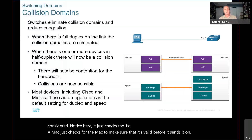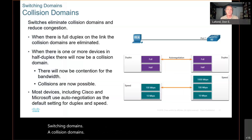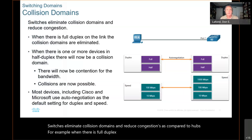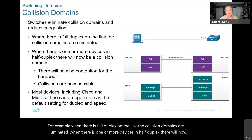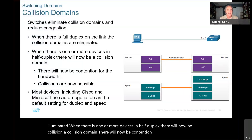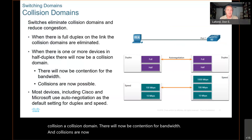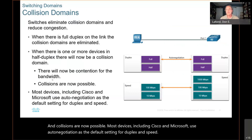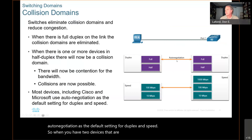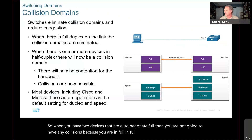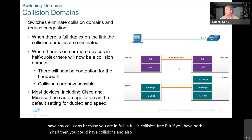Switching domains — collision domains. Switches eliminate collision domains and reduce congestion compared to hubs. When there is full duplex on the link, collision domains are eliminated. When one or more devices operate in half duplex, there is contention for bandwidth and collisions become possible. Most devices, including Cisco and Microsoft, use auto-negotiation as the default setting for duplex and speed. When two devices auto-negotiate to full duplex, there are no collisions. If both negotiate to half duplex, collisions are possible. And if there is a duplex mismatch, you will also have problems including collisions.